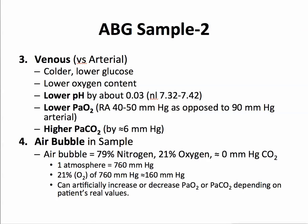Venous oxygen is going to be lower than arterial oxygen — for patients on room air it tends to be in the 40 to 50 mmHg range, as opposed to a normal arterial PaO2 from a healthy patient on room air of approximately 90 mmHg. The CO2 is higher in the venous specimen than in the arterial blood gas by about 6 mmHg.